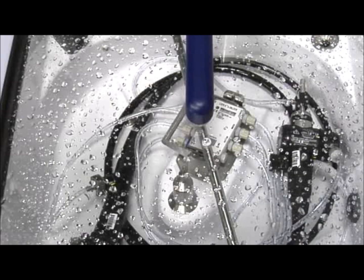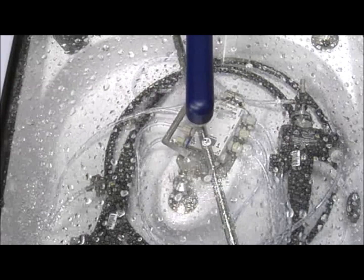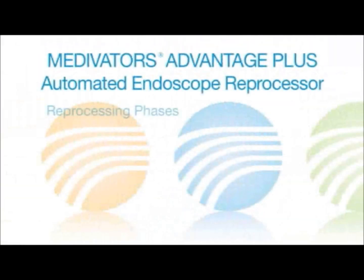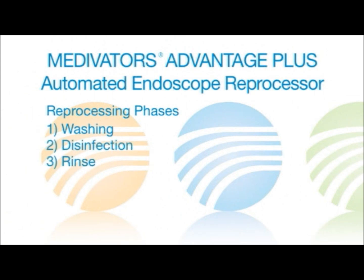The duration of the Advantage Plus cycle depends on the parameters that have been entered and the reprocessing phases chosen. The phases include the washing phase, disinfection phase, rinse phase, alcohol purge phase, and air purge phase.